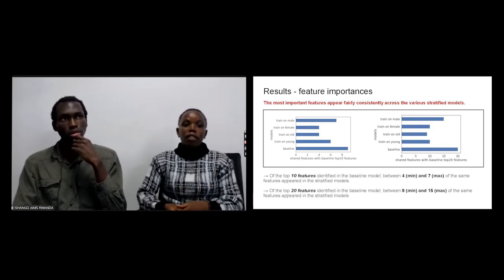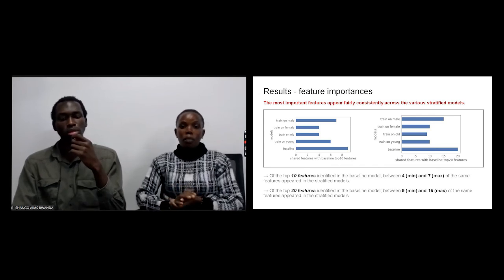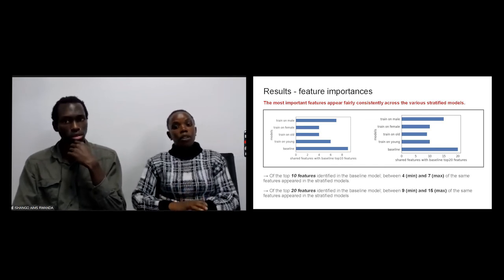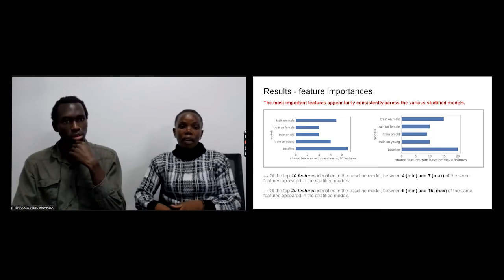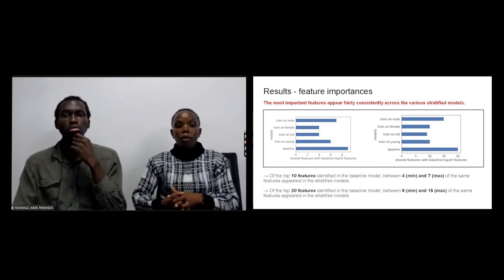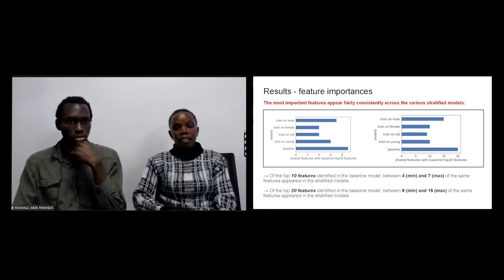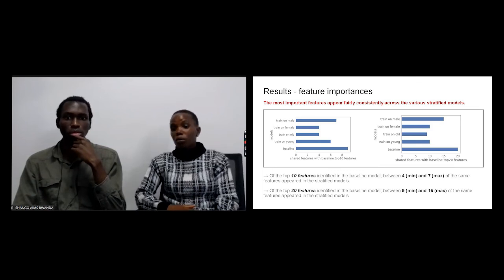Of the top 10 most features identified in our baseline, between four and seven of them appeared in other classified models. And of the 20 most important features from our baseline, we realized that nine to 15 of them appeared in these classified models, meaning feature importance is consistent.